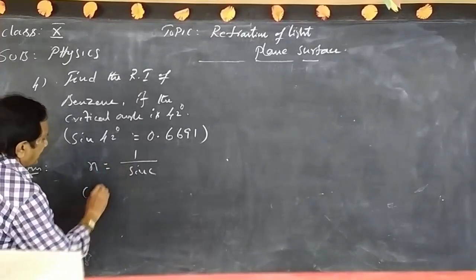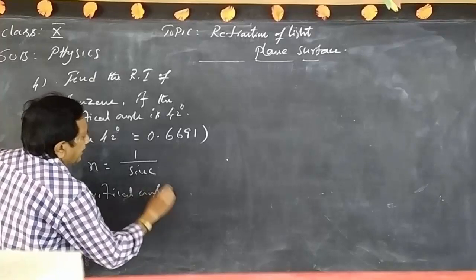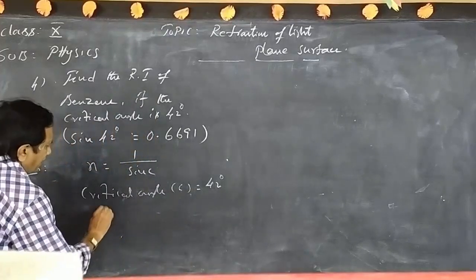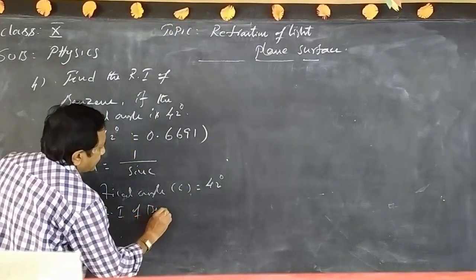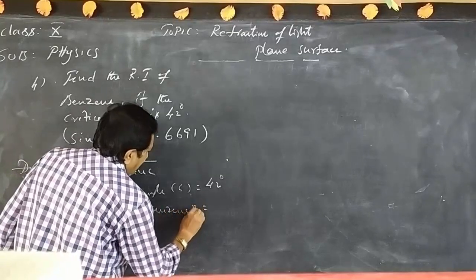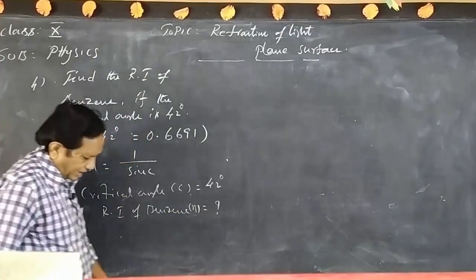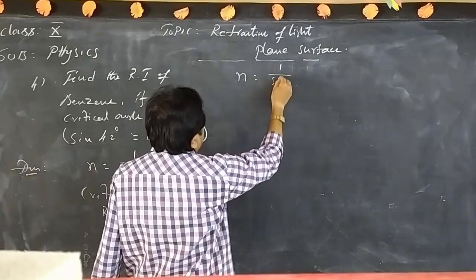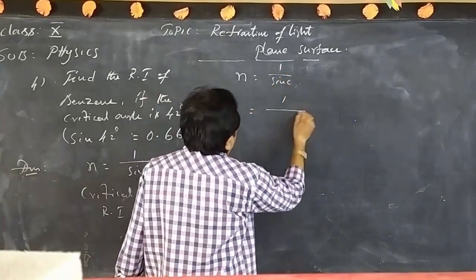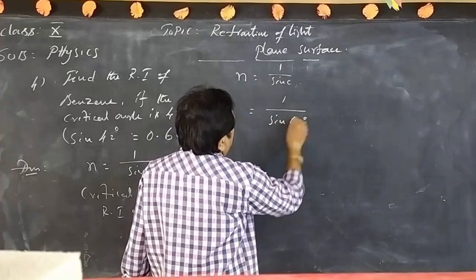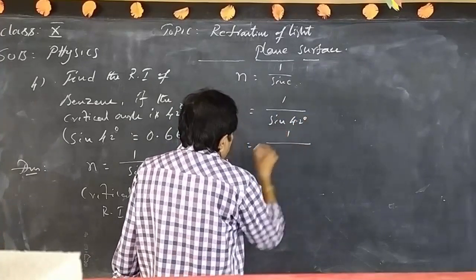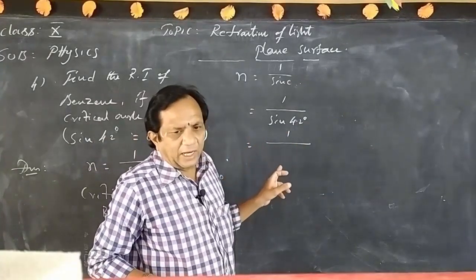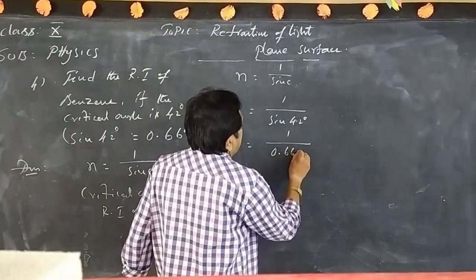Here the given value is: critical angle C = 42 degrees. We have to find the refractive index of benzene. Applying the formula n = 1 / sin C = 1 / sin 42°, and the value of sin 42 is 0.6691, so n = 1 / 0.6691.